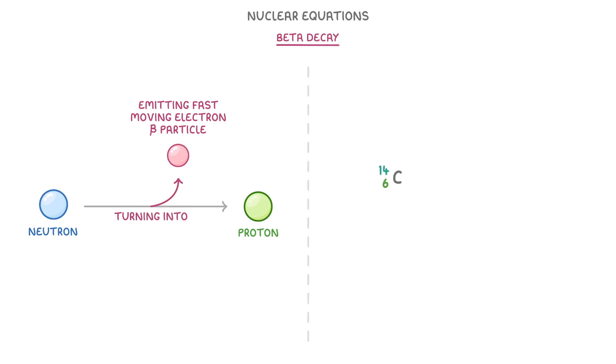So if carbon-14 was to decay and emit one of these electrons, then because it's effectively gained a proton, its atomic number would increase from 6 to 7, making it nitrogen rather than carbon. However, its mass number would stay the same, because although it's gained a proton, it also lost a neutron, so still only has a total of 14 protons and neutrons in its nucleus.